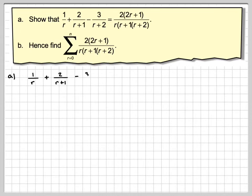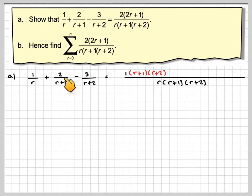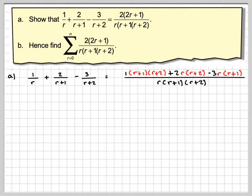So what we need is a common denominator. A common denominator would be r(r+1)(r+2). Note: you will not be needed to multiply that out. So this 1 has been multiplied by (r+1)(r+2), the 2 has been multiplied by r(r+2), and the minus 3 has been multiplied by r(r+1).